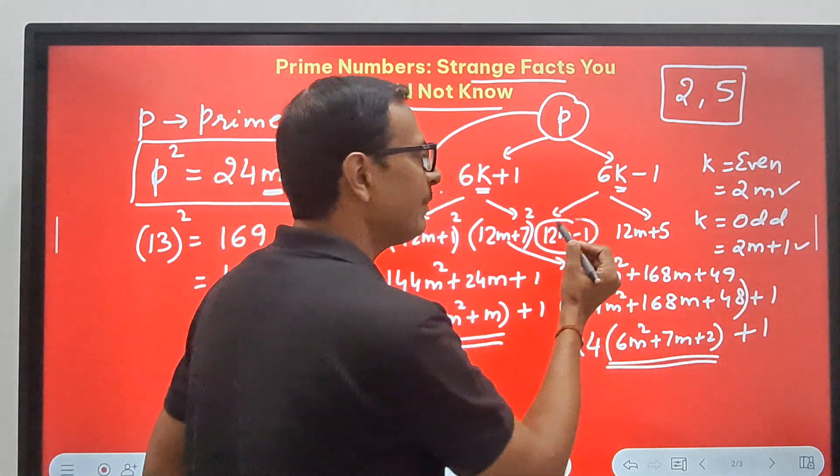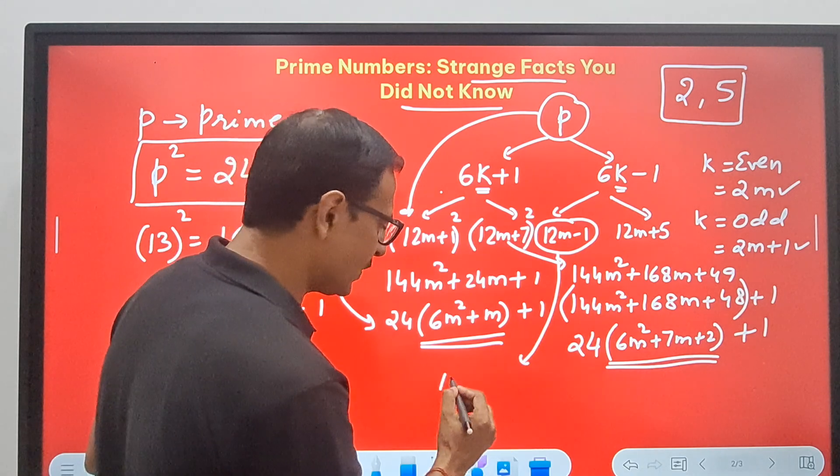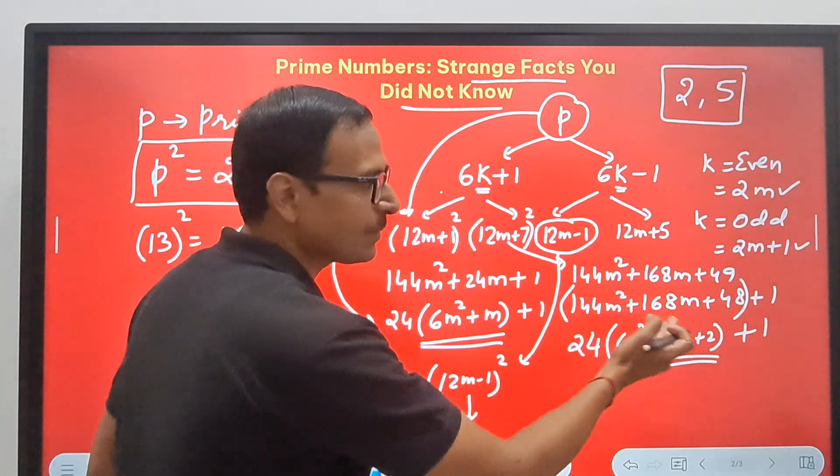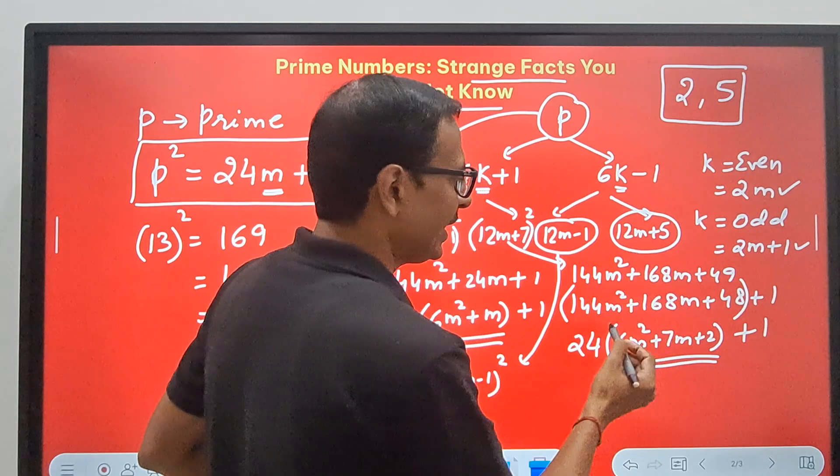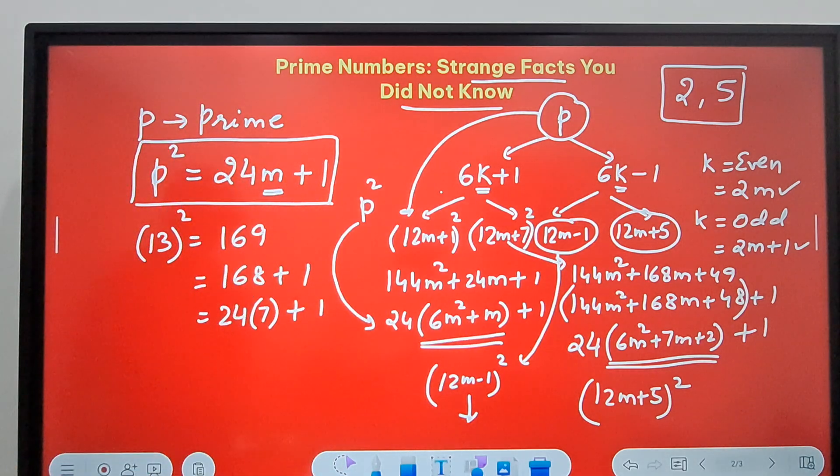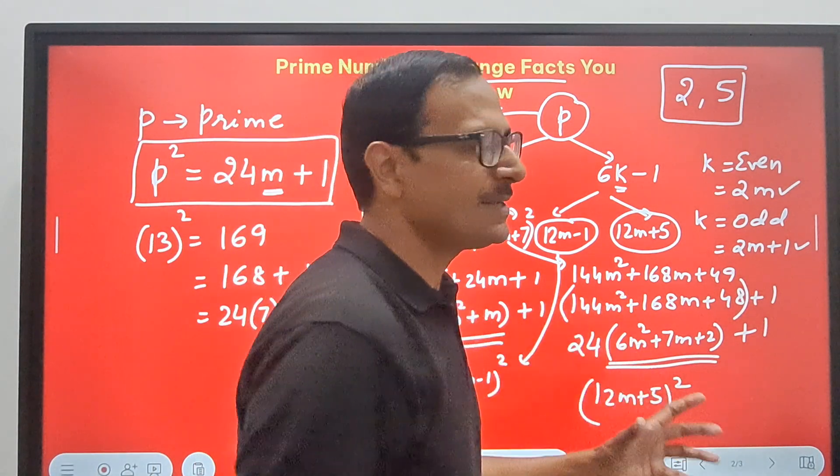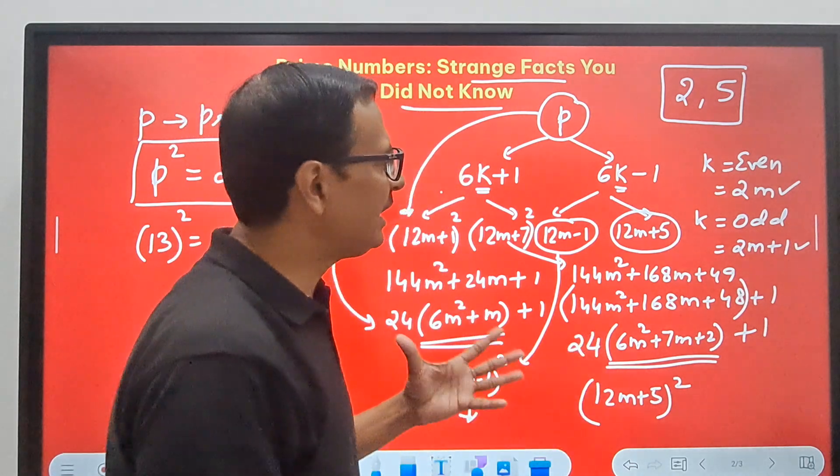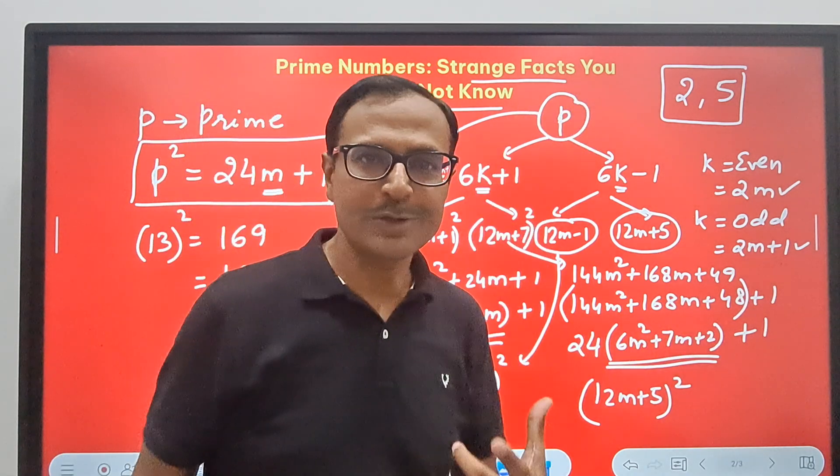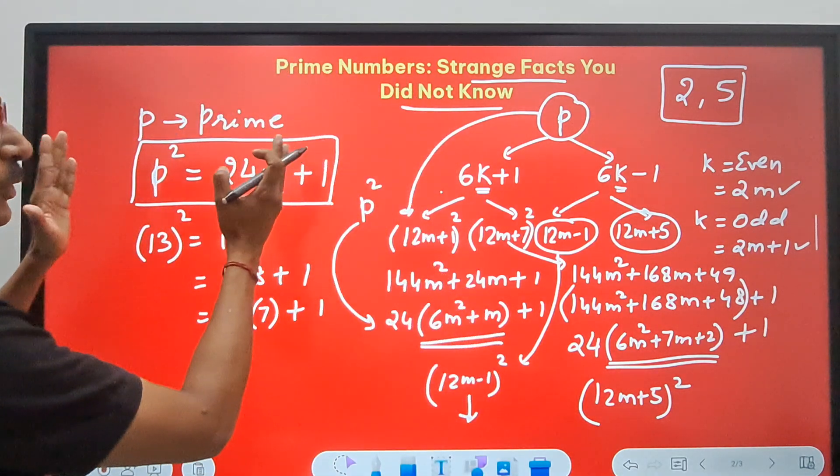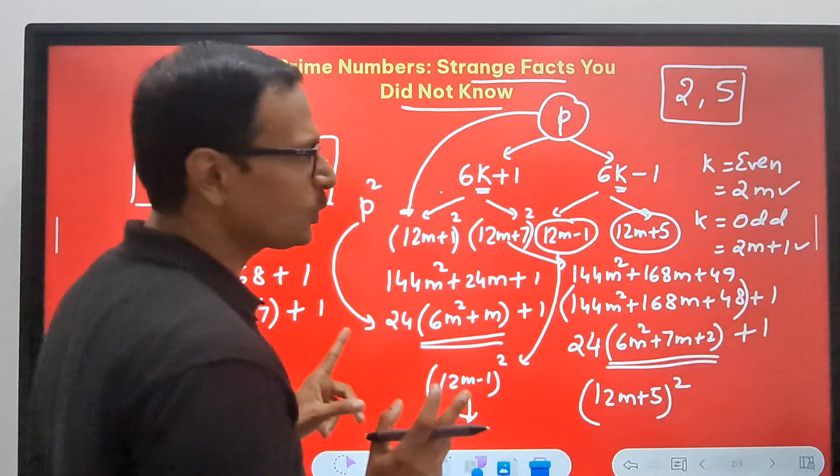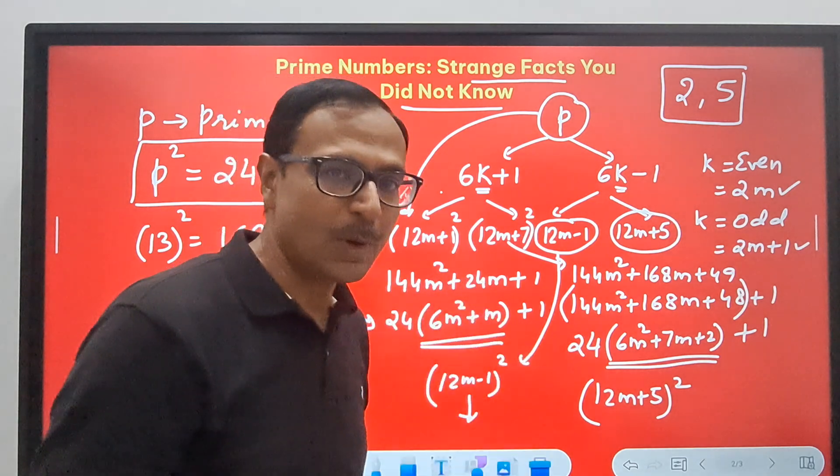Similarly, try taking 12m minus 1 whole square, expand it, and you'll be able to express it in this form: 24 times something plus 1. Likewise this one, expand 12m plus 5 whole square, and you'll express it in the same form. So you know, when you go into something, you start understanding things. Prime numbers are wonderful. We've written so many different alphabets here: k, p, m. We're using all sorts of notations to denote prime numbers, just to prove one property: that the square of a prime number is 1 more than a multiple of 24.